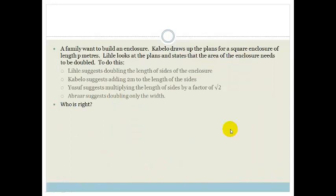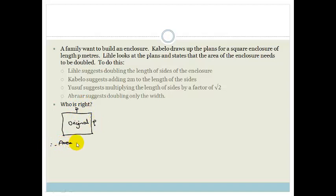A family wants to build an enclosure. Cabello draws up plans for a square enclosure of side length p meters. Lichler says the area needs to be doubled. We start with the original: it's p by p, so the original area is p squared.